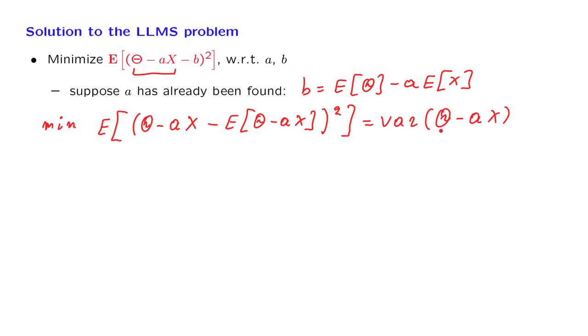This is the variance of the difference of two random variables. Because the two random variables are dependent, this is not just the sum of the individual variances. But we do have a formula, even for the general case.